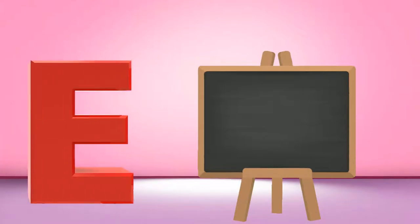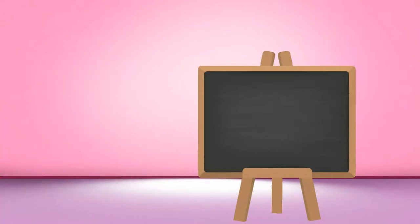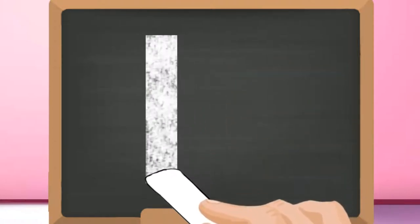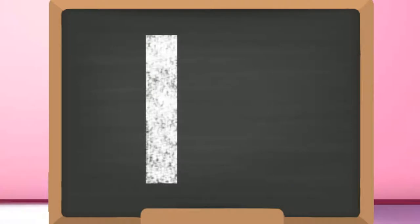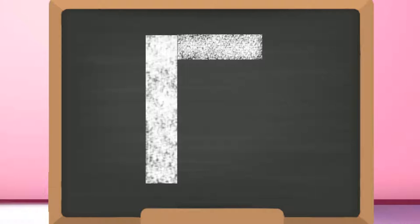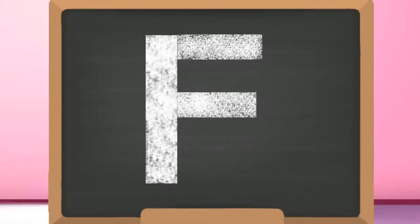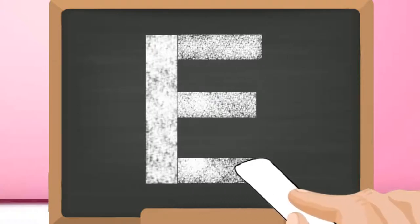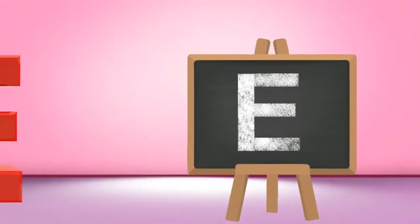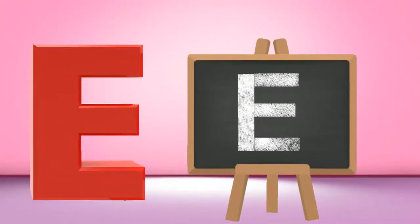E, capital E. Start from the top and draw a standing line down. Go again to the top and draw a slanting line to the right. Then go to the middle and draw another line. Lastly, go to the bottom and draw one more line in the same way. Capital E.